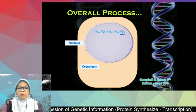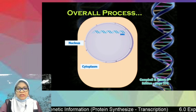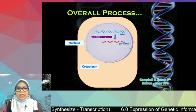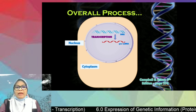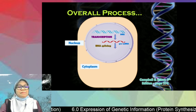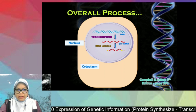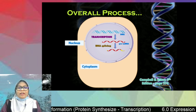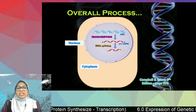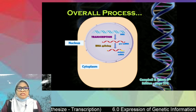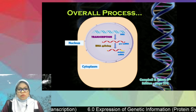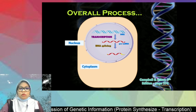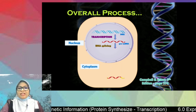Here is the process overview. In the nucleus, DNA is used as a template and undergoes transcription to produce pre-mRNA. From pre-mRNA, it undergoes a process called RNA splicing to produce mRNA. The difference is that pre-mRNA consists of non-coding regions called introns, while mRNA consists of all coding regions called exons. During RNA splicing, introns are removed. The mRNA is then transported to the cytoplasm where translation occurs.